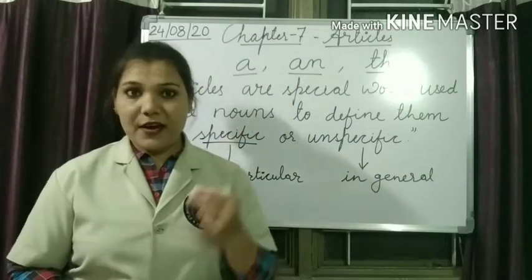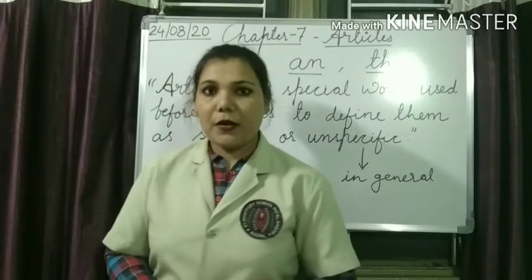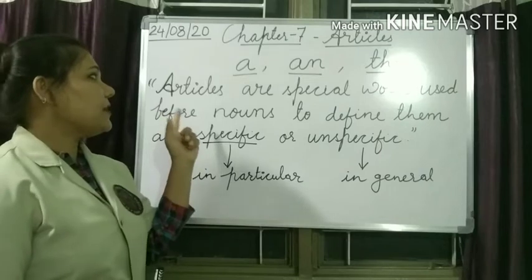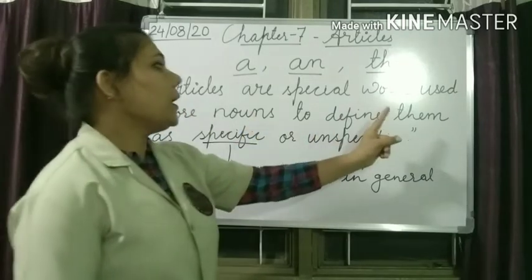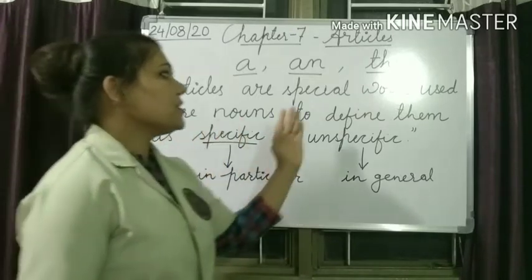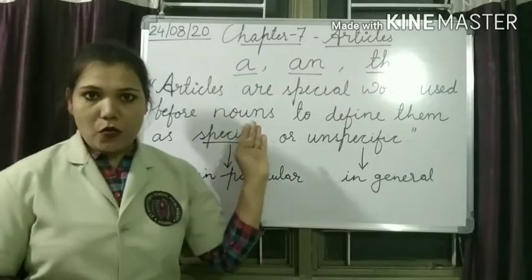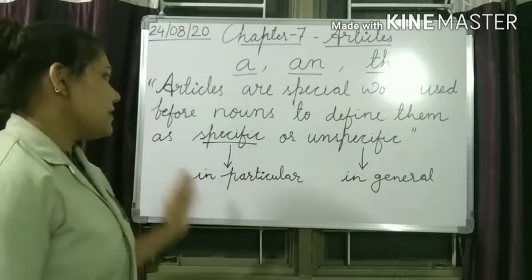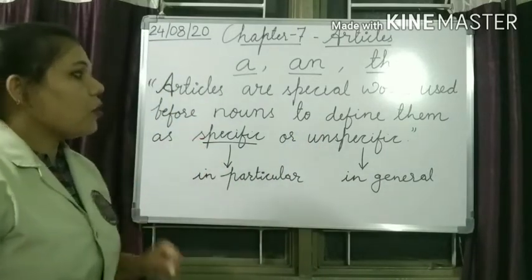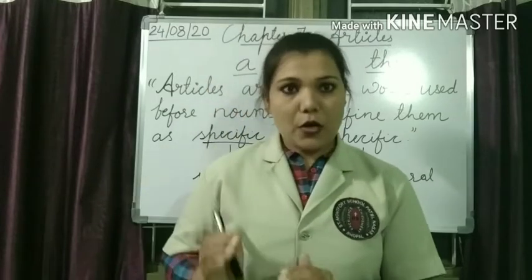What are articles? We have 3 articles: A, An, and The. Articles are special words used before nouns to define them as specific or unspecific. We put them before nouns to make them specific — meaning in particular — or unspecific — meaning in general.